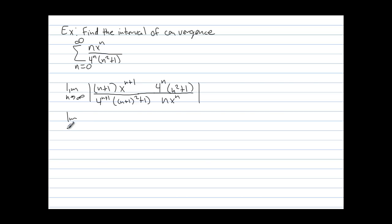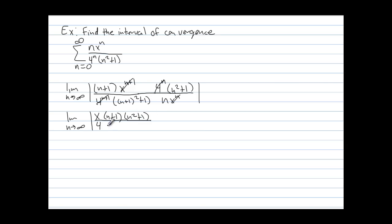Now we have the limit as n approaches infinity of the absolute value of the simplified expression. We have x to the n plus 1 over x to the n, so when we subtract we just have x on top. For the 4's, we have 4 to the n over 4 to the n plus 1, so the n's cancel and we get a 4 in the denominator. All the remaining n terms give us: n plus 1 times n squared plus 1, over n times (n plus 1) squared plus 1.